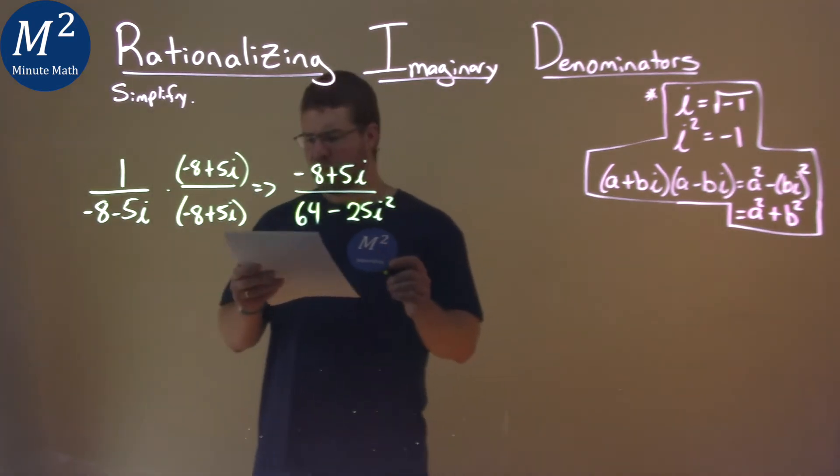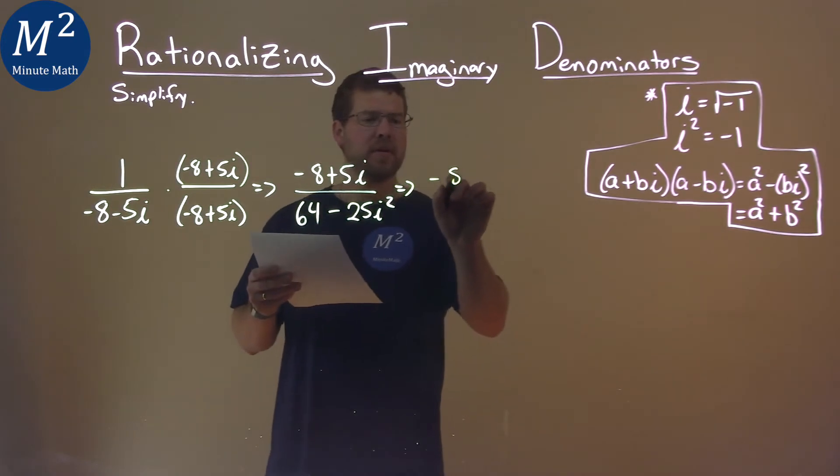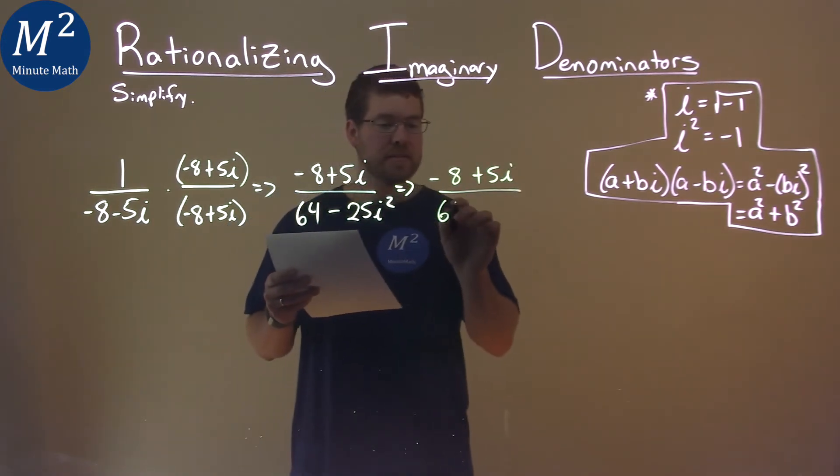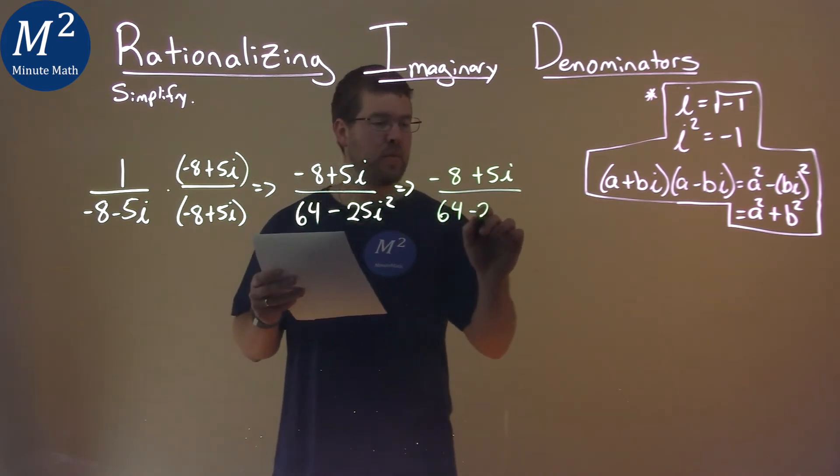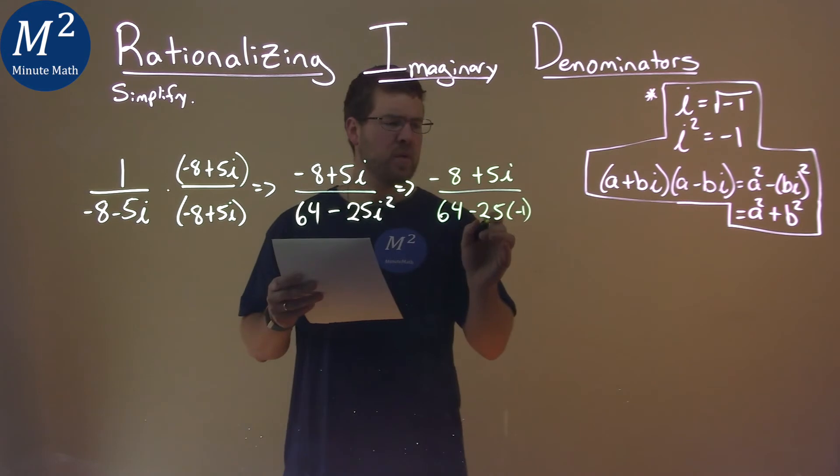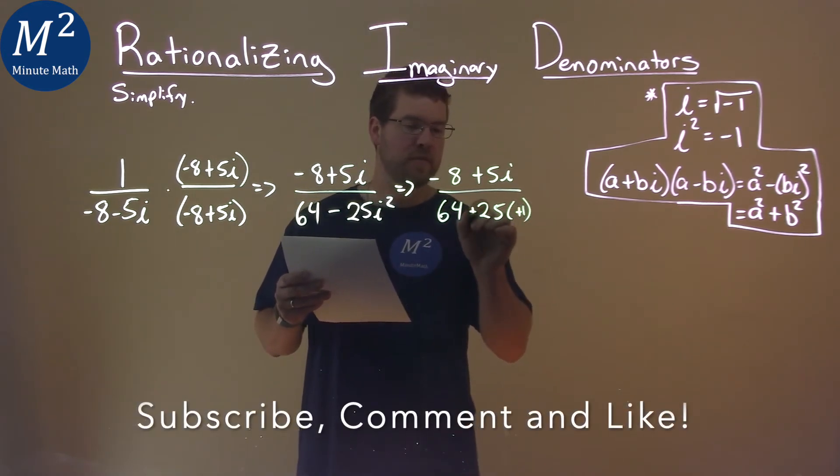And so now, we have to take what we know about i squared and simplify. So, the numerator, negative 8 plus 5i stays where it is. Denominator, 64, minus 25, i squared is negative 1. 25 times negative 1 is, or negative 25 times negative 1 is positive 25.